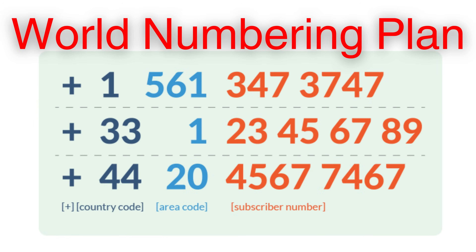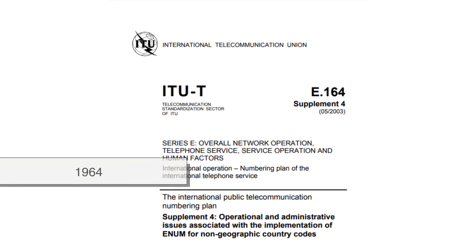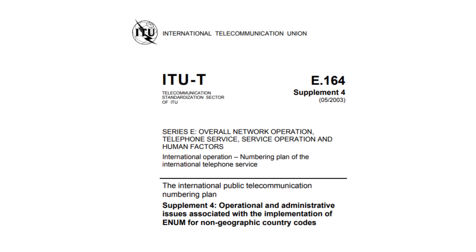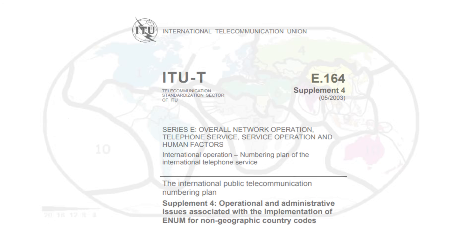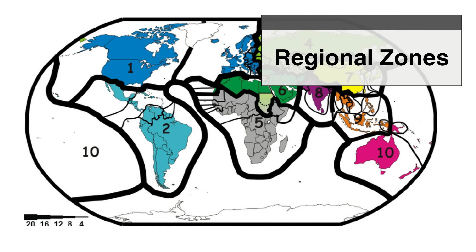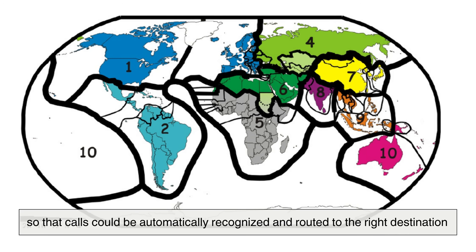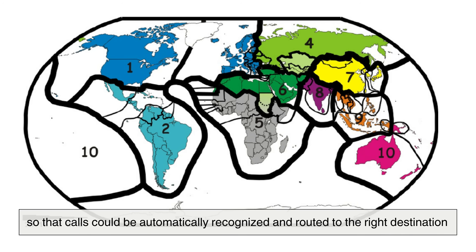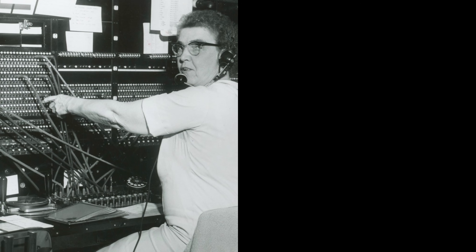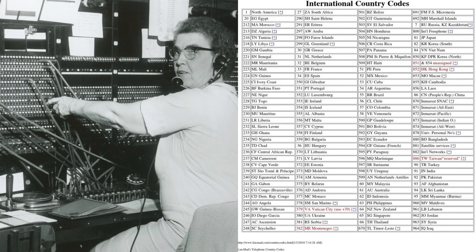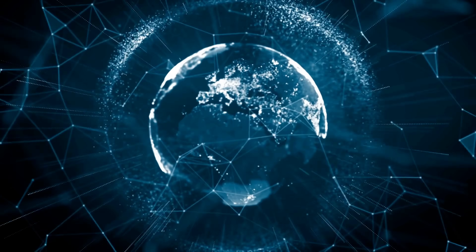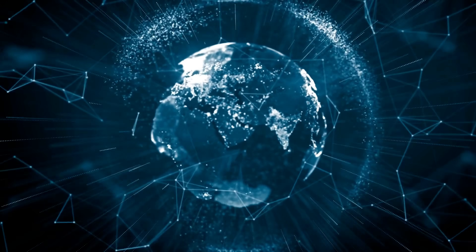The ITU's efforts led to the creation of the World Numbering Plan, formalized in 1964 as ITU-T Recommendation E.164. This system divided the world into regional zones, assigning each nation a unique code so that calls could be automatically recognized and routed to the right destination. It was a simple yet brilliant solution — turning a tangled web of local networks into one coordinated global map where every country could finally speak the same numerical language.